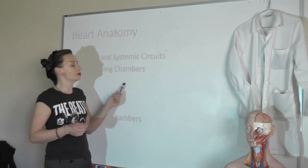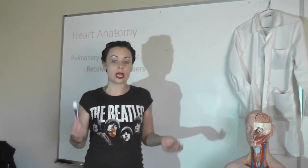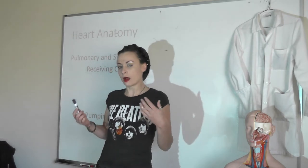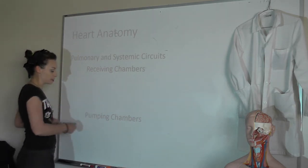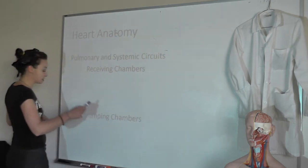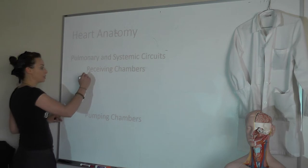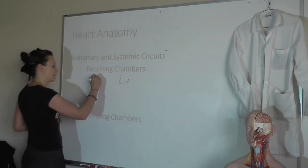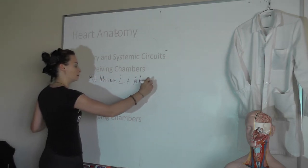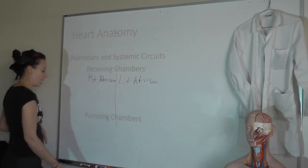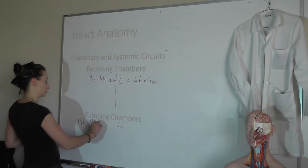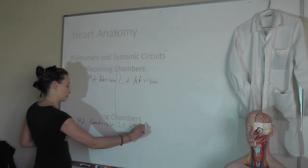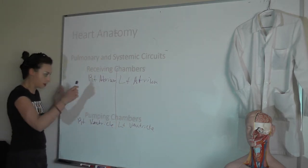The two superior chambers are called atria — you have a right and a left atrium. These receive blood from either the pulmonary or the systemic circuit, mostly passively. Then they squeeze a little and pump blood through to the inferior pumping chambers, the ventricles, which have the big job of pumping blood out to the circuits. Our receiving chambers are the atria, and our pumping chambers are the ventricles — right and left for each.